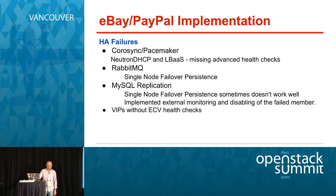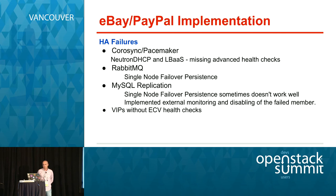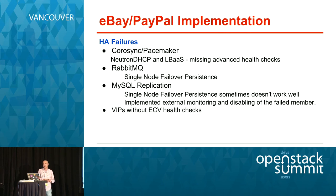With Neutron DHCP, we have issues where we have to do manual cleanup on namespaces — we have to kill dnsmasq processes. For RabbitMQ, we have mixed success with single-node failover persistence — in some cases it doesn't work well and creates issues requiring cleanup. We are working on moving toward three-node mirrored queues.